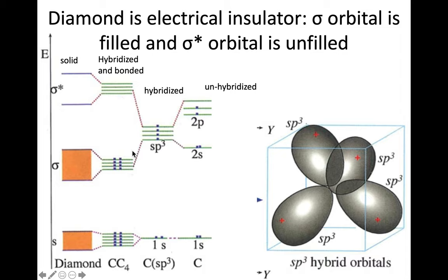That's why it's an insulator. Because this, which we think of as the valence band, is completely filled, whereas this is what we think of as the conductive band is completely empty. So there are no free electrons, as we call them.